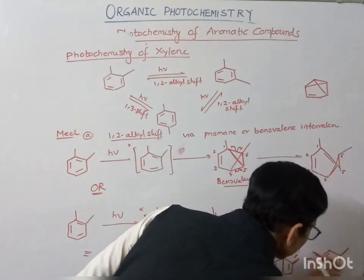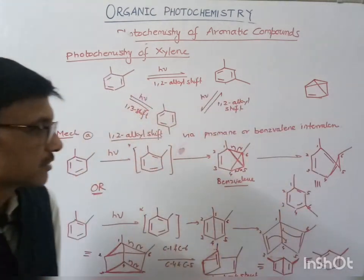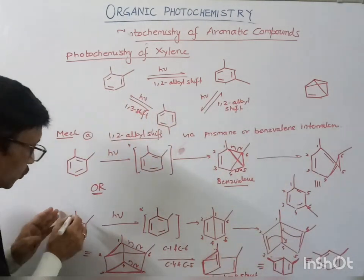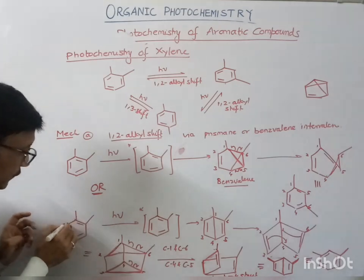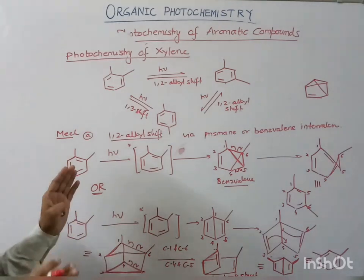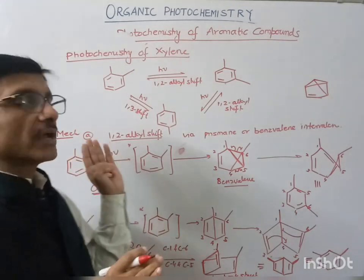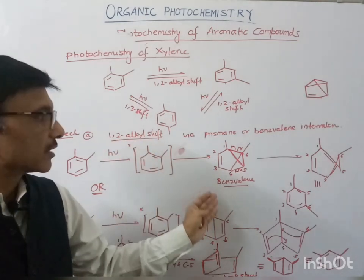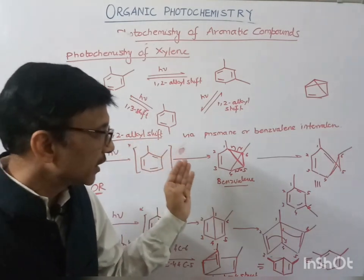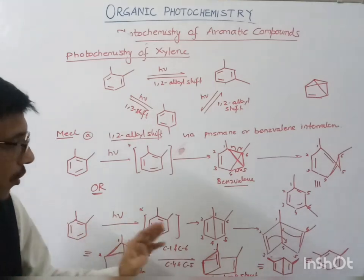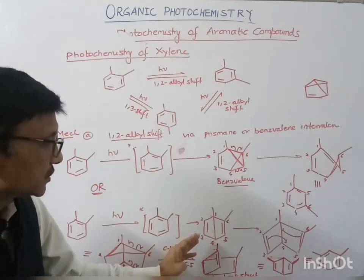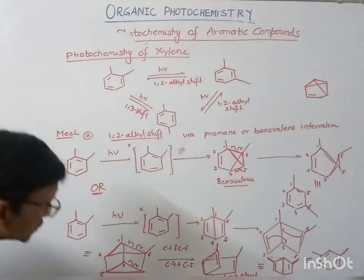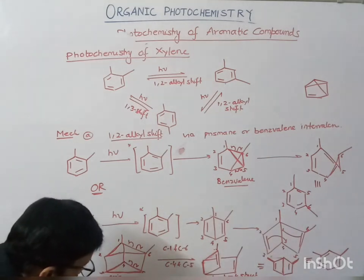So what we have shown is the 1,2-alkyl shift and the 1,3-alkyl shift. Overall, the 1,2-alkyl shift can occur either via the benzvalene intermediate or via the prismane-type intermediate. This is our prismane intermediate.